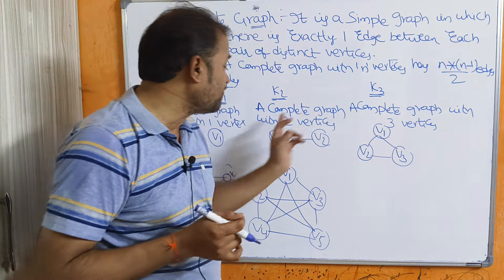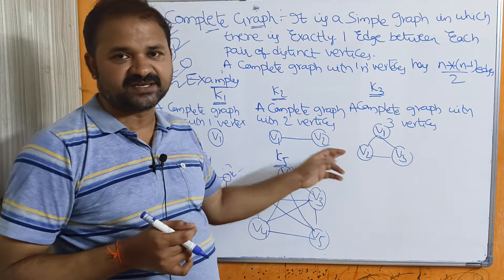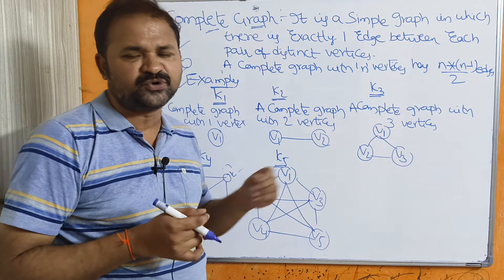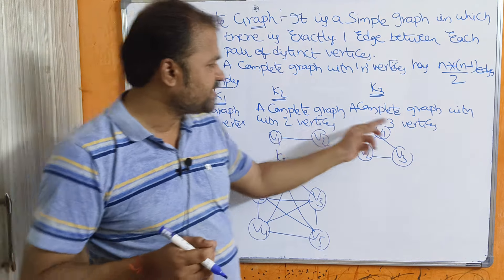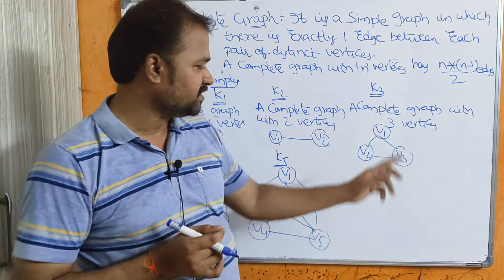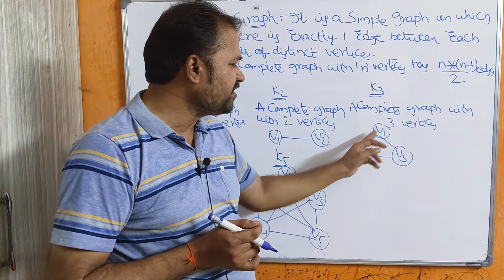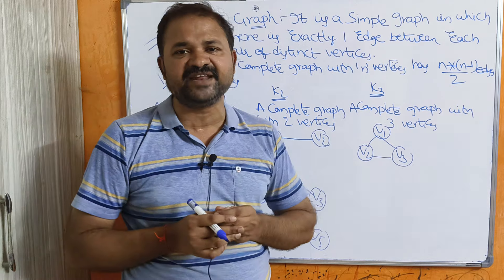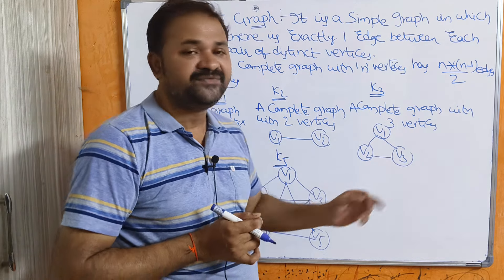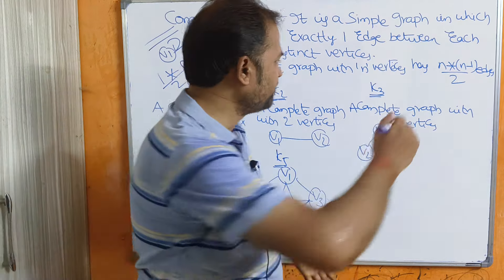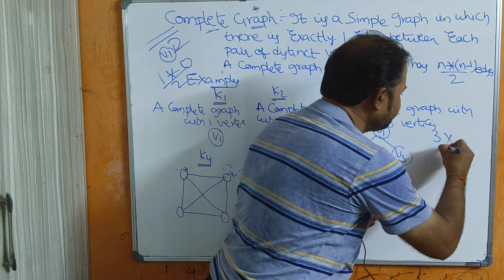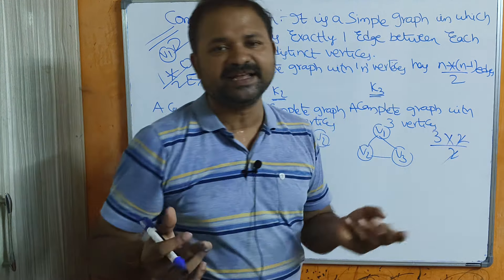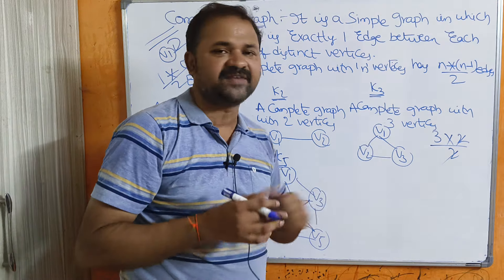A complete graph K2 has only 2 vertices, with an edge from V1 to V2. K3 has 3 vertices V1, V2, V3 — from V1 we have edges to V2 and V3, from V2 to V1 and V3, and from V3 to V1 and V2. Using the formula: 3×(3−1)/2 = 3 edges, and this graph contains 3 edges.